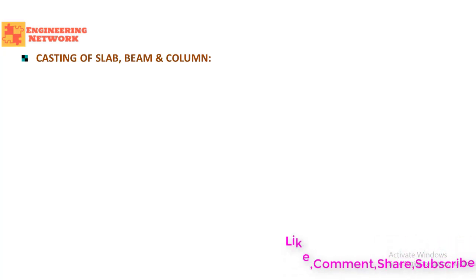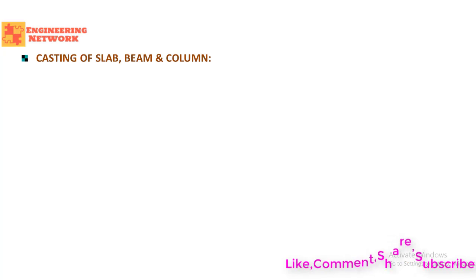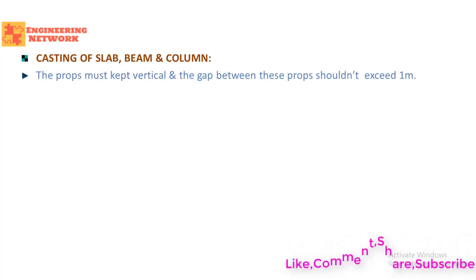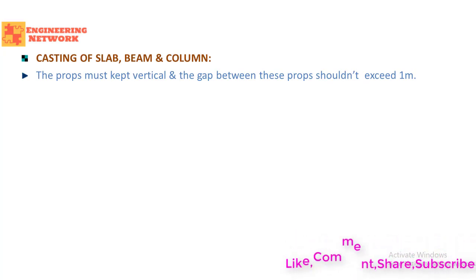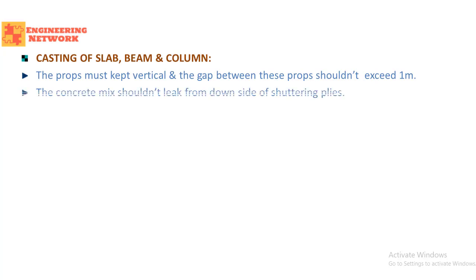Another important aspect of building construction is the casting of slabs, beams, and columns. The first thing a site engineer must check is the shuttering. Props used to support shuttering plies must be kept perfectly vertical, and the gap between props should not exceed one meter. Props must be properly tightened. During casting, concrete mix must not leak from the underside of shuttering plies — any holes must be identified and blocked.